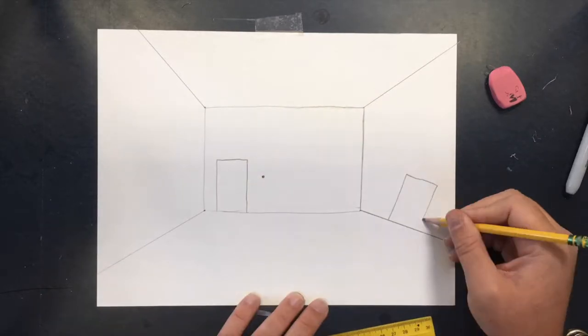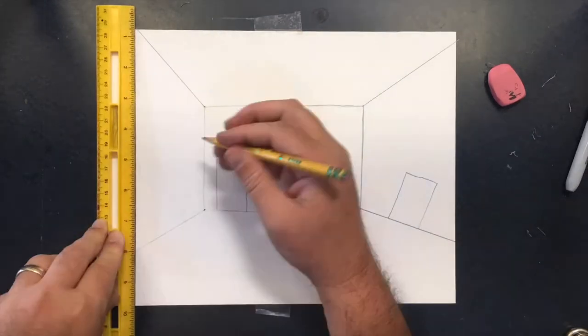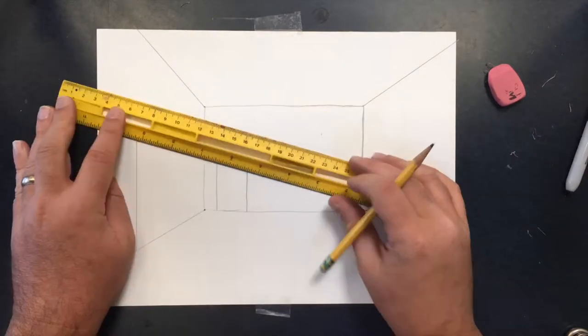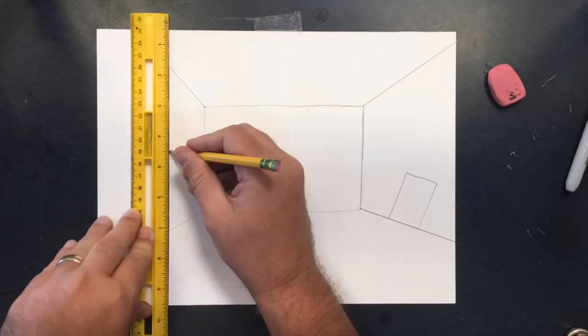To draw on the back wall, just draw like you normally would. The most common mistake is to draw on the side walls the same way that you would draw on the back wall.